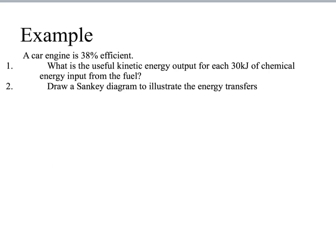All right, so now we'll look at another example where we have to use the same equation but we have to change the subject of the equation. So, a car engine is 38% efficient. What is the useful kinetic energy output for each 30 kilojoules of chemical energy input from the fuel? And then part two, draw a Sankey diagram to illustrate the energy transfers.